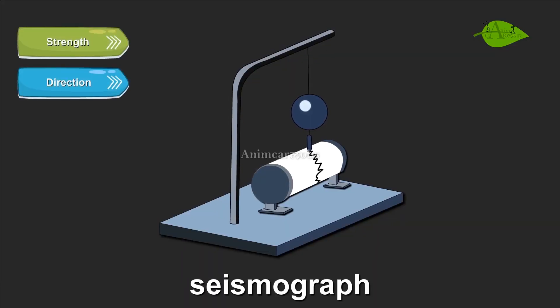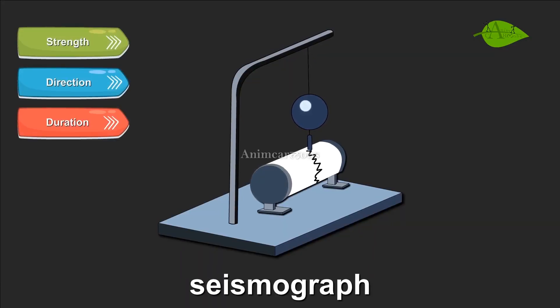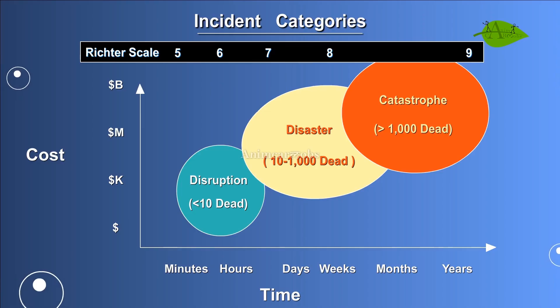The strength, direction and duration of an earthquake are measured using a seismograph. The extent of an earthquake is measured on the Richter scale.